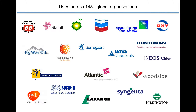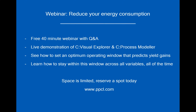145 global organizations are using these software packages to improve their processes, and we want to invite you to a free webinar showing you how to reduce your energy consumption. We'll demonstrate the two software packages, and using them, we'll identify an optimum operating window that predicts yield gains, and then show you how to stay within this window across all variables all of the time, so that you have a significantly improved process. Space is limited, so reserve a spot today.